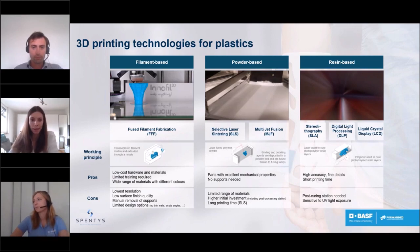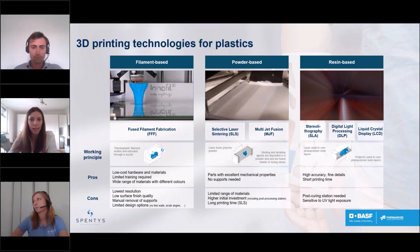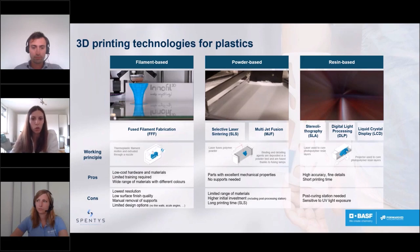The third technology is resin-based printing, where a liquid resin is cured layer by layer using a light source such as a laser or projector. The advantages are very high accuracy, the ability to print very fine details, and relatively short printing times. The disadvantages are that post-curing equipment is required for handling the part after printing, and some materials are sensitive to UV light.